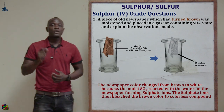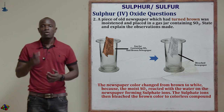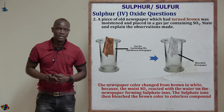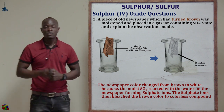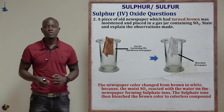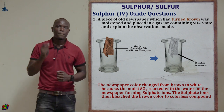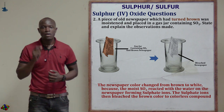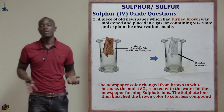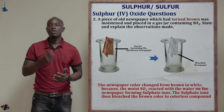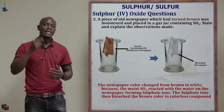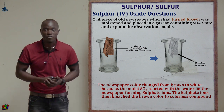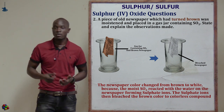The second question asks: a piece of old newspaper which had turned brown was moistened and placed in a gas jar containing sulfur 4 oxide — state and explain the observations made. The color of the newspaper will change from brown to colorless, because the moist sulfur 4 oxide reduces the brown dye to a colorless compound. Sulfur 4 oxide has a very powerful bleaching effect, apart from chlorine.